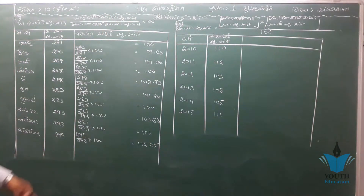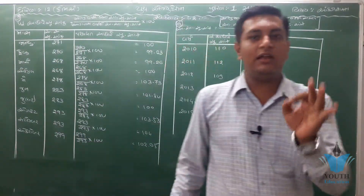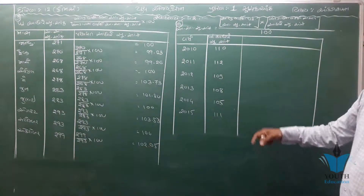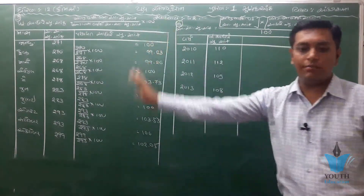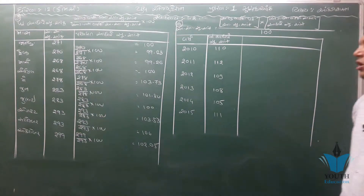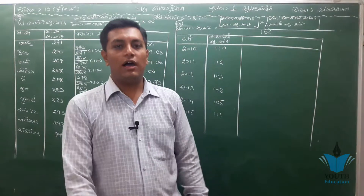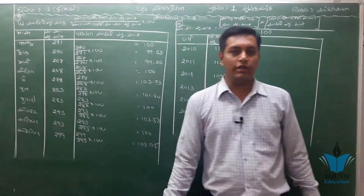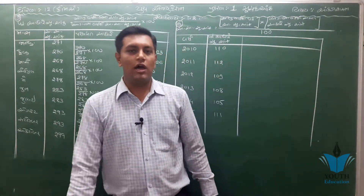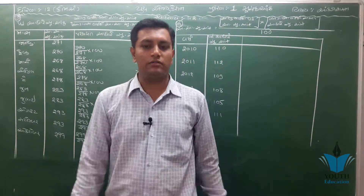યાદ રાખો: ચલ રાશિ - દરેક વર્ષે આધા (છેદ) માં જે ચલ રાશિ લો છો એ બદલાતી રહે છે. હવે આપણે પ્રશ્ન નંબર ચારની ગણત્રી ઉપર આવીએ. પ્રશ્ન નંબર ચારમાં આપણને પરંપરિત આધારના સૂચકાંક આપ્યા છે.